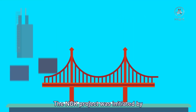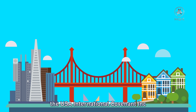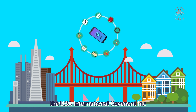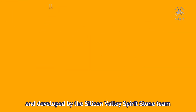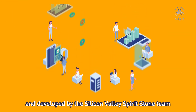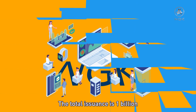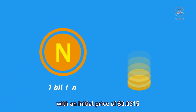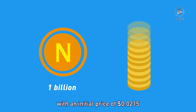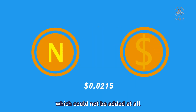The NGK project was initiated by the USA International Covenant Inc. and developed by the Silicon Valley Spiritstone team. The total issuance is $1 billion, with an initial price of $2.15, which could not be added at all.